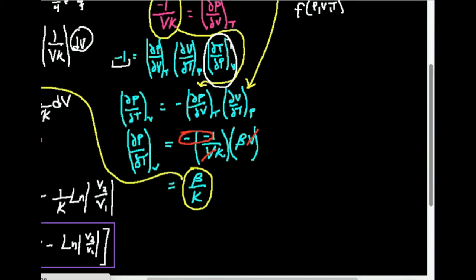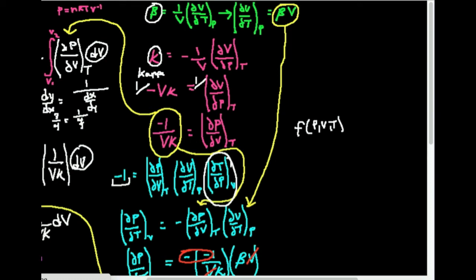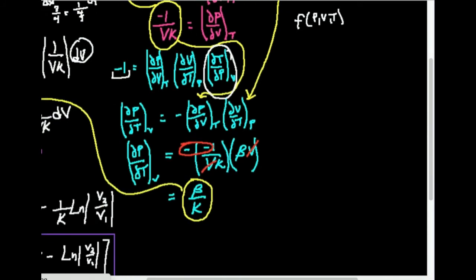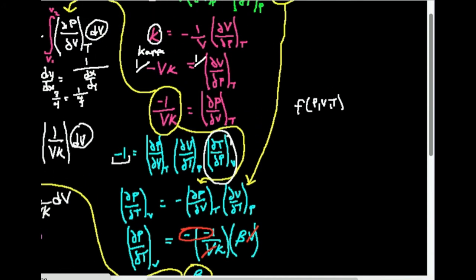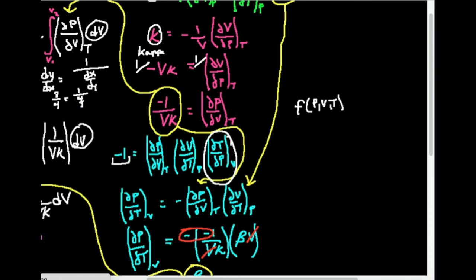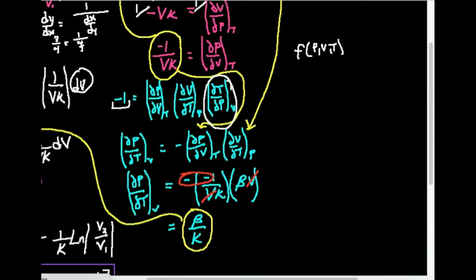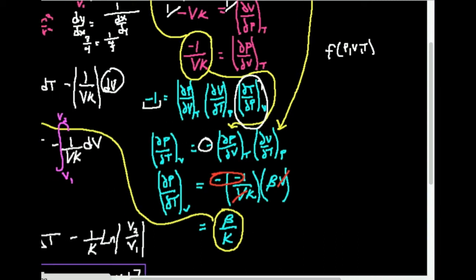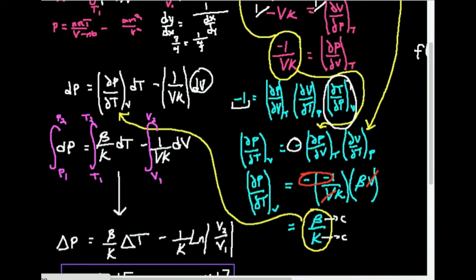We already found that the partial of V with respect to T at constant P is beta V — so I substitute beta V for that derivative. And we showed that the partial of P with respect to V at constant T is negative one over V kappa — so I substitute that as well. The volume cancels, and the two negative signs cancel, giving us: the partial of P with respect to T at constant V equals beta over kappa. Both beta and kappa are constants, so their quotient is also a constant.